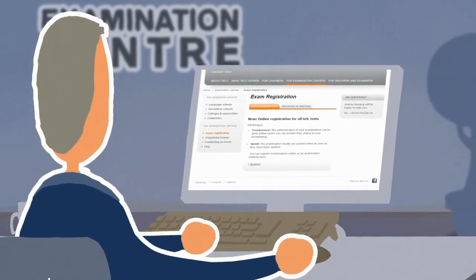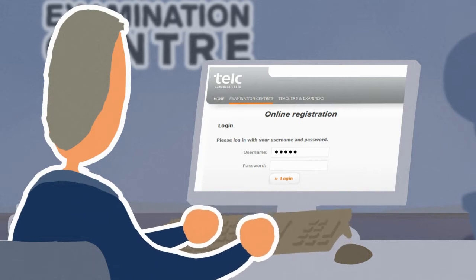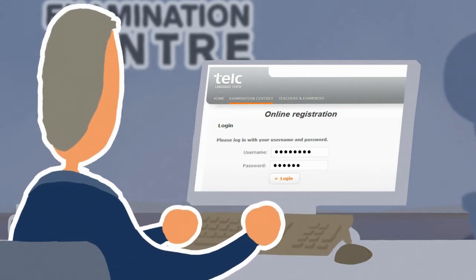To register an examination online, examination centres need to use their code number and password. These are issued after the licensing procedure is completed.